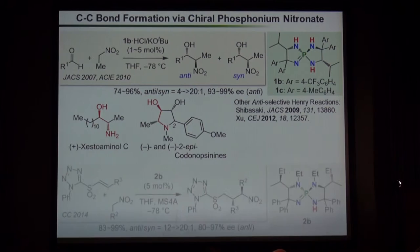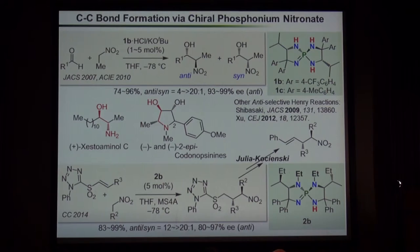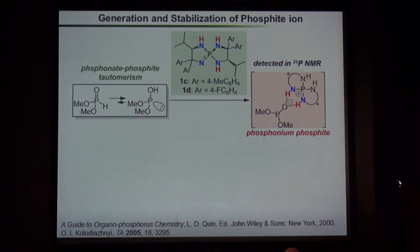Recently, we succeeded in extending the formation of the phosphoramide nitronate to stereoselective conjugate addition. For example, we can introduce nitroalkane to a vinyl sulfone-type substrate to form the corresponding adduct. This compound can be converted into non-conjugated nitroalkanes using Julia–Kocienski reactions. Because of the difficulty of direct alkylation of the nitronate, we believe this process is a nice alternative for the synthesis of such molecules.